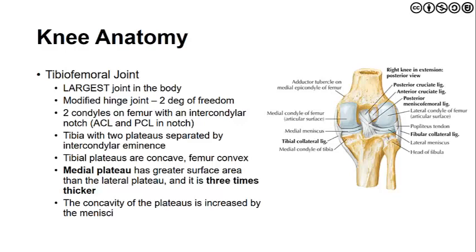The tibia consists of two plateaus separated by the intercondylar eminence where we find the distal attachment of the ACL and PCL. The tibial plateaus are concave while the femur is convex, which contributes to our understanding of the biomechanics of the knee with both open and closed chain knee flexion and extension as well as the screw-home mechanism. The medial plateau has a greater surface area than the lateral plateau and is also three times thicker, accounting for the increased forces displaced through the medial compartment. The concavity of the plateaus is increased by the menisci.